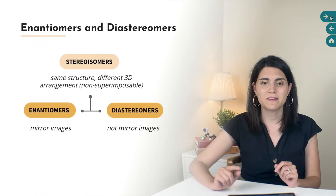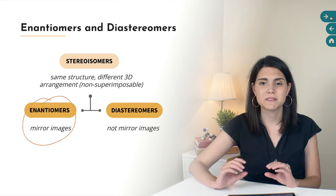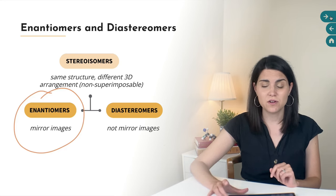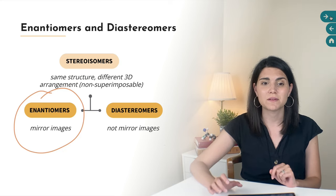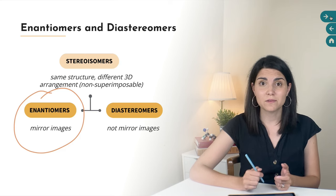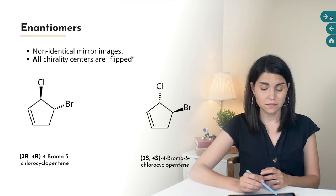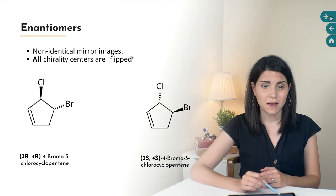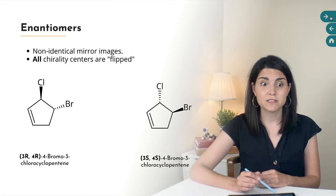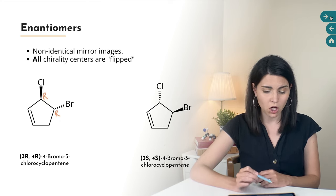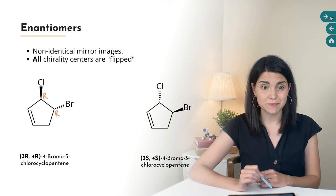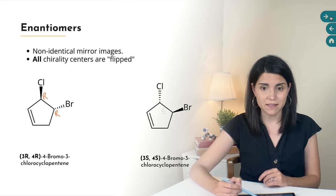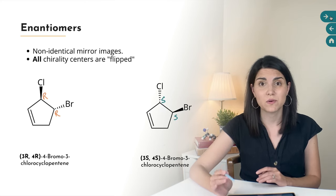So far in all of my lessons on stereochemistry, we've been talking a lot about a specific class of stereoisomers called enantiomers. Enantiomers are stereoisomers that are non-superimposable, non-identical mirror images of one another. Molecules that have enantiomers are called chiral molecules. For example, this molecule is chiral because we cannot find any plane or point of symmetry in it. It has two chirality centers with absolute configurations R and R, so the full name is 3R,4R-4-bromo-3-chlorocyclopentene. And the enantiomer, which is the mirror image of the original, has configurations S and S — so its full name is 3S,4S-4-bromo-3-chlorocyclopentene.